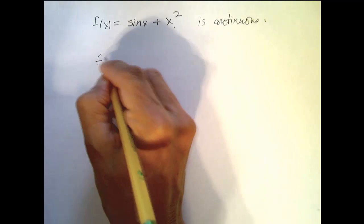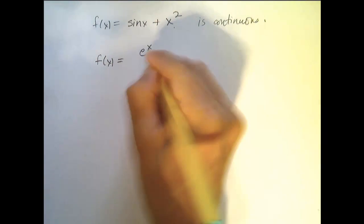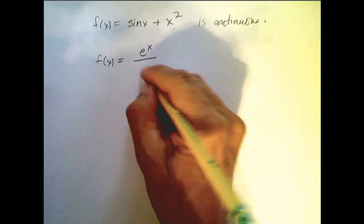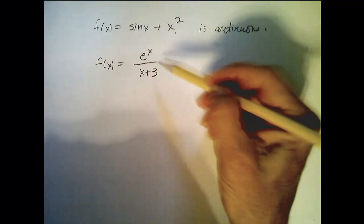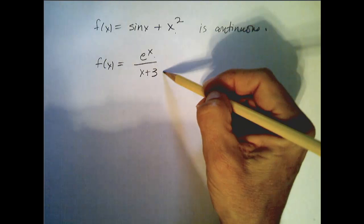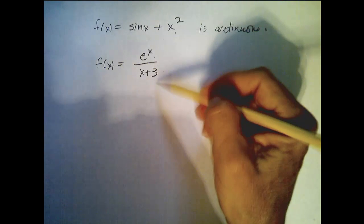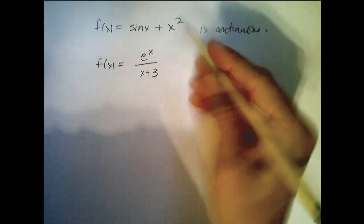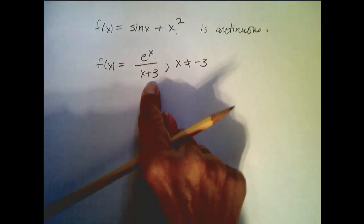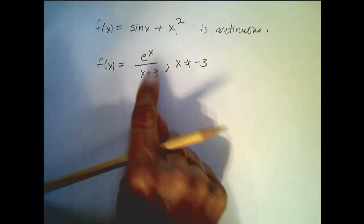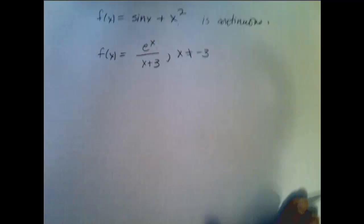Likewise, let's say f of x equals e to the x over x plus 3. Well, e to the x is continuous everywhere and x plus 3 is continuous everywhere. So the quotient is continuous everywhere except when x is negative 3, because then we have 0 in the denominator, so we have to throw that out.